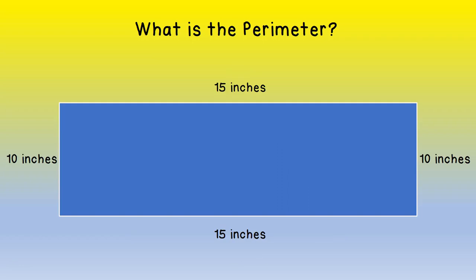Very good. Here is a rectangle and again all of the sides are labeled. You've got 15 inches, 10 inches, 15 inches, and 10 inches. Use those measurements to find the perimeter.